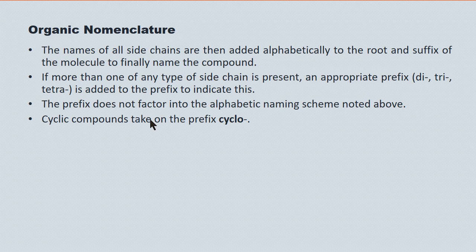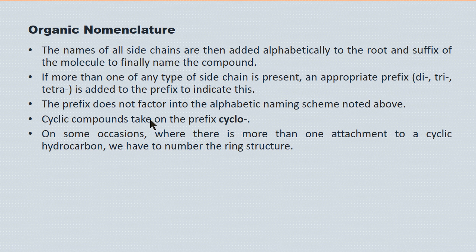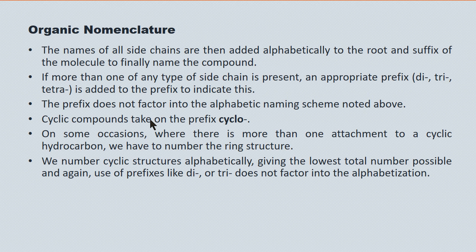On some occasions, if we have a cyclic compound, it might have more than one attachment, and then we have to apply numbers to that ring structure. We number cyclic structures alphabetically, giving the lowest total number possible to these side chains. If need be, we will employ prefixes like 'di' and 'tri' and the like.